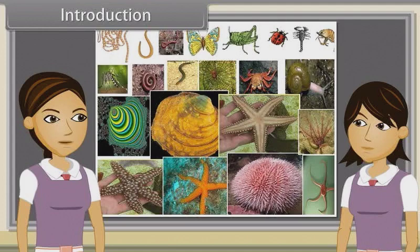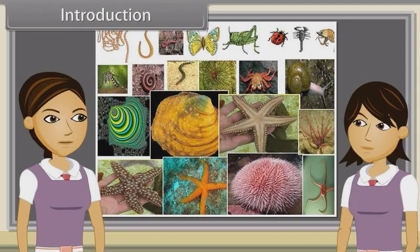Now we are going to discuss characteristics of Hemichordates, Chordates, Vertebrates, Cyclostomata, Chondrichthyes, Osteichthyes, Amphibians, Reptilia, Aves and Mammalia.